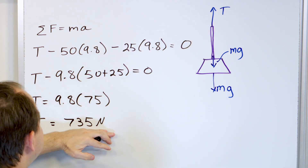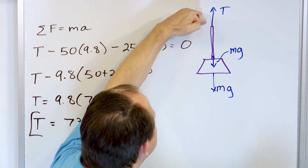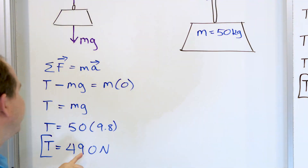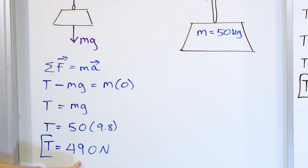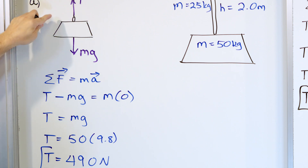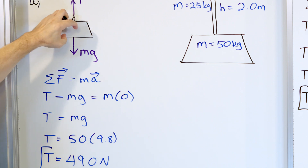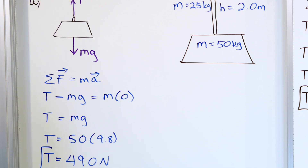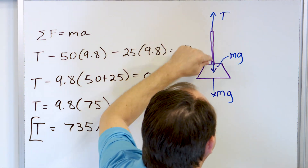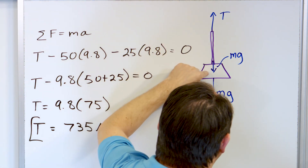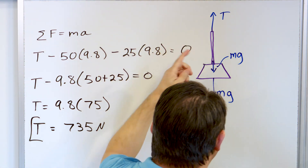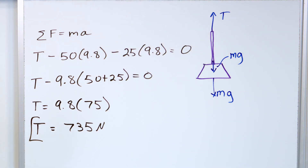The tension at the top is much more than at the bottom — 735 newtons compared to 490 newtons — because the tension at the bottom was only supporting the weight of the chandelier, while the tension at the top is supporting the entire chandelier plus all the weight of the chain itself.